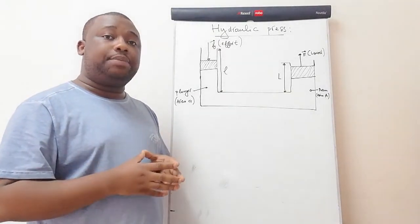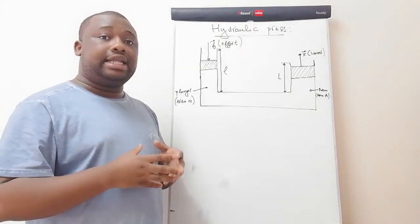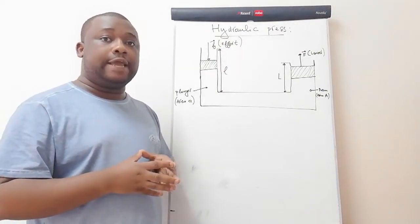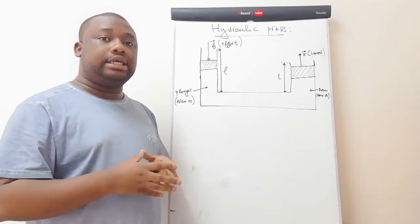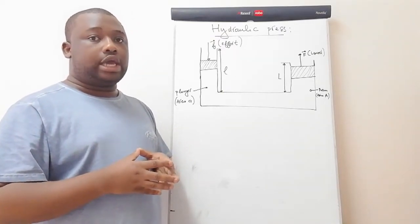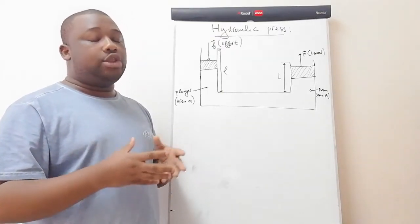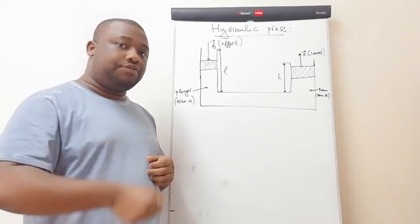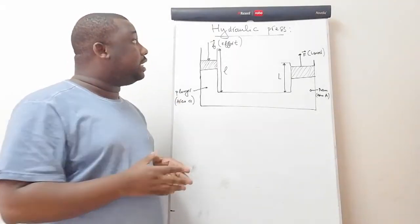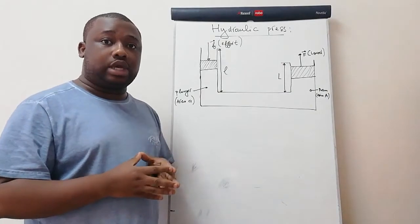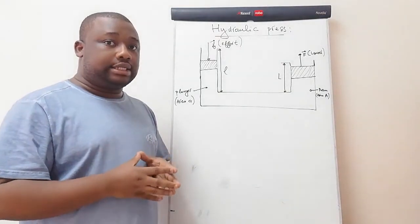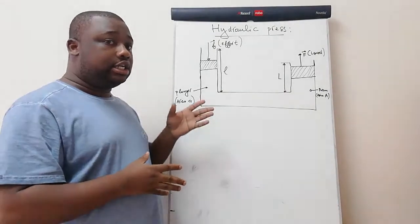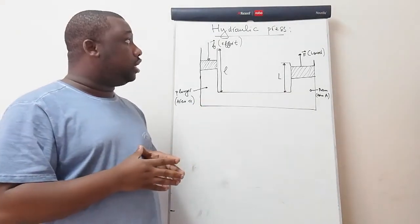A hydraulic press is a machine that generates a compressive force, mostly used to press or to lift a load. For example, when you use a hydraulic jack to lift up your car, that's a typical case of a hydraulic press.